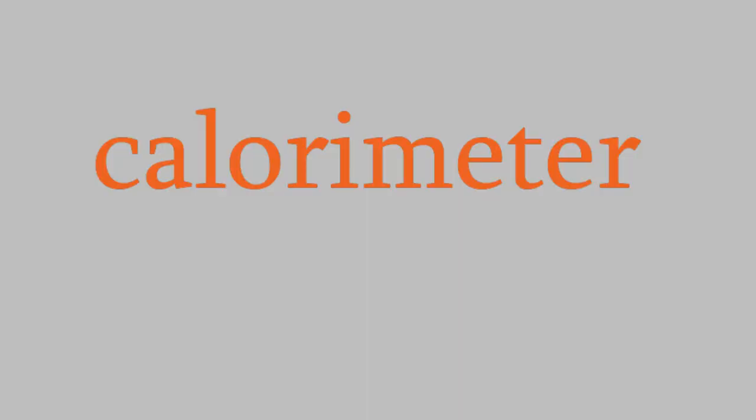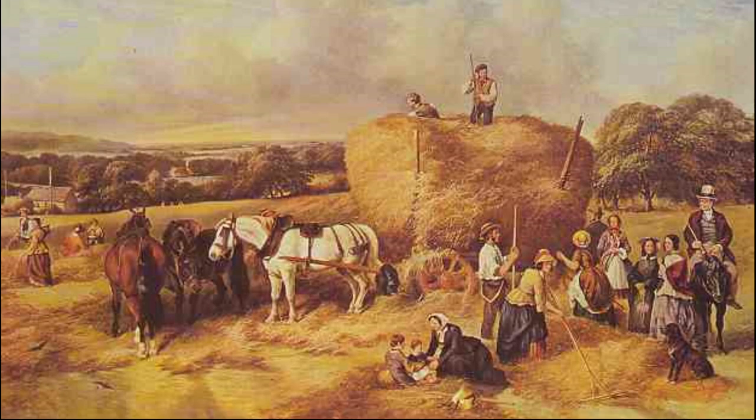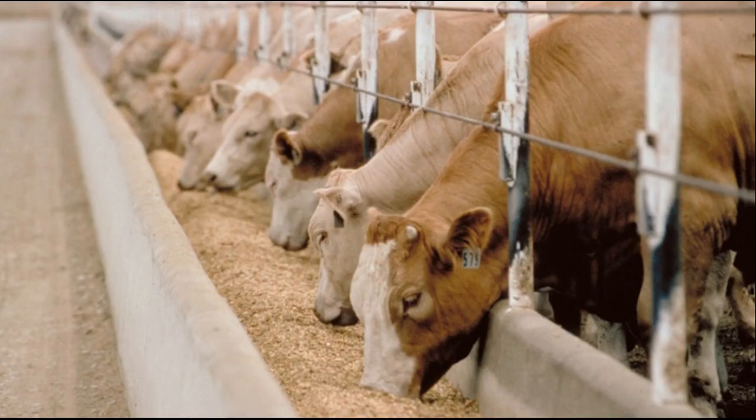The device we use is called a calorimeter. The very first calorimeter was invented by Antoine Lavoisier and Pierre-Simon Laplace. Lavoisier was interested in improving farming practices in 18th century France. One of the things he studied was how efficient different kinds of livestock feed are. If you have several different types of grain you could feed your cows, which ones would give your cows the most energy?